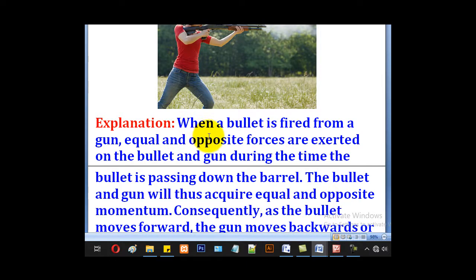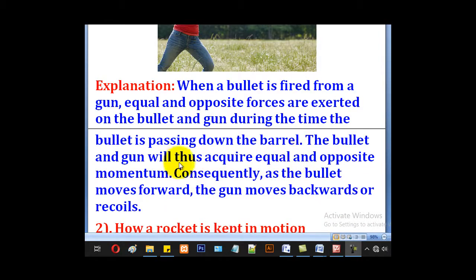So when a bullet is fired from a gun, equal and opposite forces are exerted on the bullet and the gun during the time the bullet is passing down the barrel. The bullet and the gun will first acquire equal and opposite momentum. Consequently, as the bullet moves forward,